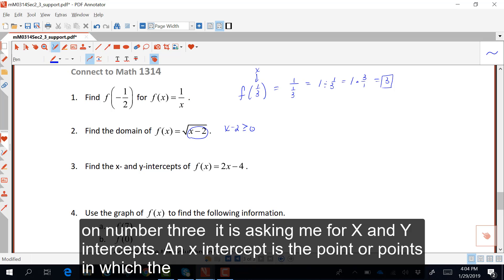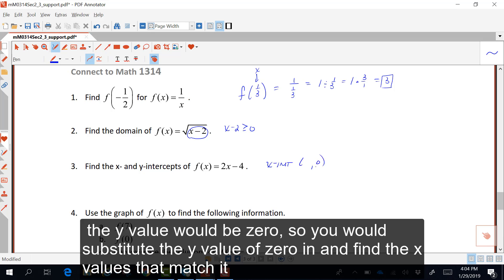On number three, it's asking me for x and y-intercepts. An x-intercept is the point or points in which the y value would be 0. So, you would substitute the y value of 0 in and find the x values that match it.